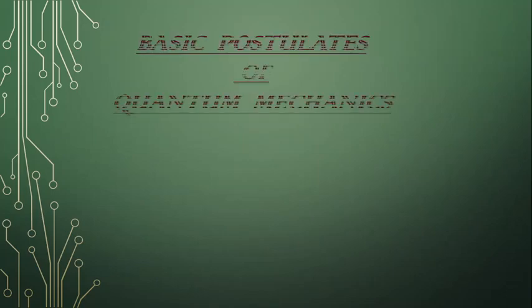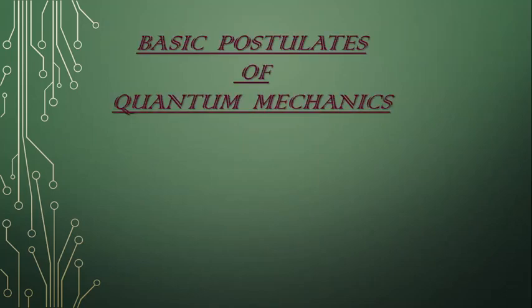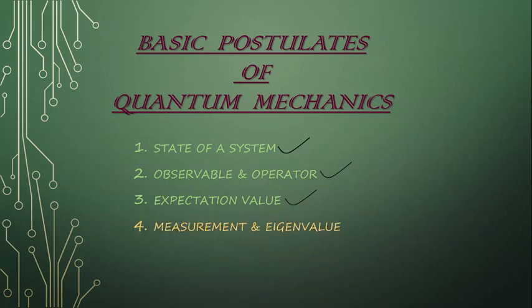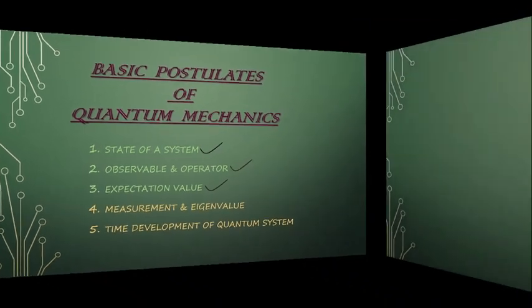Hello everyone. I am going to continue with my previous topic, that is basic postulates of quantum mechanics. We have already discussed the first three postulates, which describe the state of a system, observable and operator, and expectation value. Out of the five, we are remaining with the next two postulates to be discussed today: measurement and eigenvalue, and time development of a quantum system with respect to a dynamical system. So let's start.